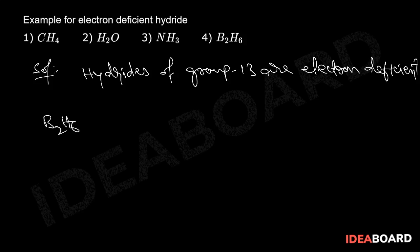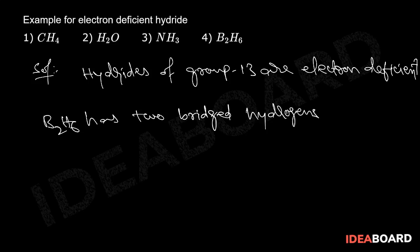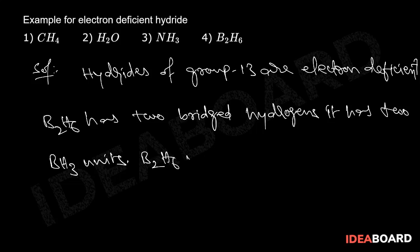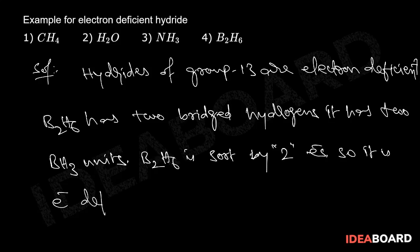B₂H₆ has two bridge hydrogens. It has two BH₃ units. B₂H₆ is short by two electrons, so it is electron-deficient.